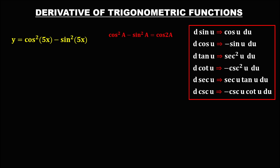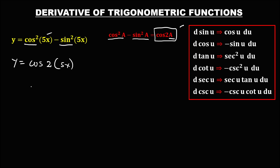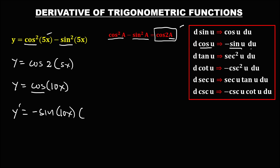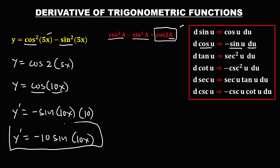For the next given, using the double angle identity for cosine: cosine squared(a) minus sine squared(a) equals cosine(2a). First, we need to convert this given using the trigonometric identity. We have cosine squared minus sine squared, which equals cosine of 2 times the angle. The angle is 5x, so this becomes y equals cosine(10x). To find the derivative: the derivative of cosine is negative sine of 10x, times the derivative of 10x, which is 10. So y prime equals negative 10 sine(10x). This is the derivative.